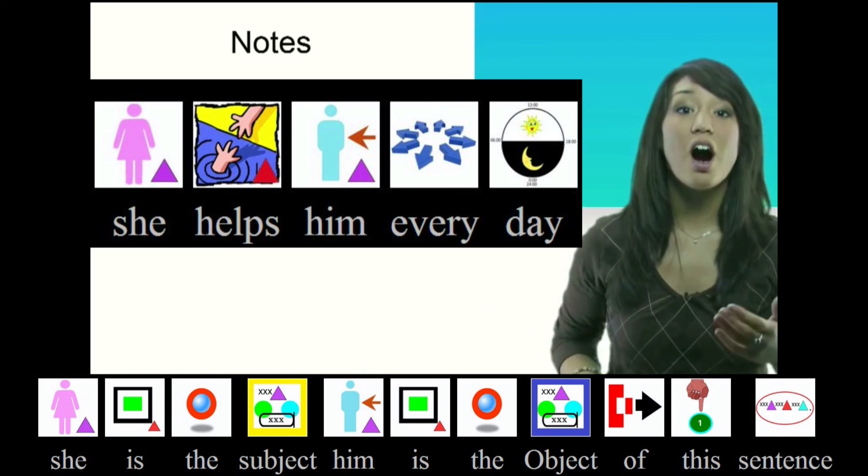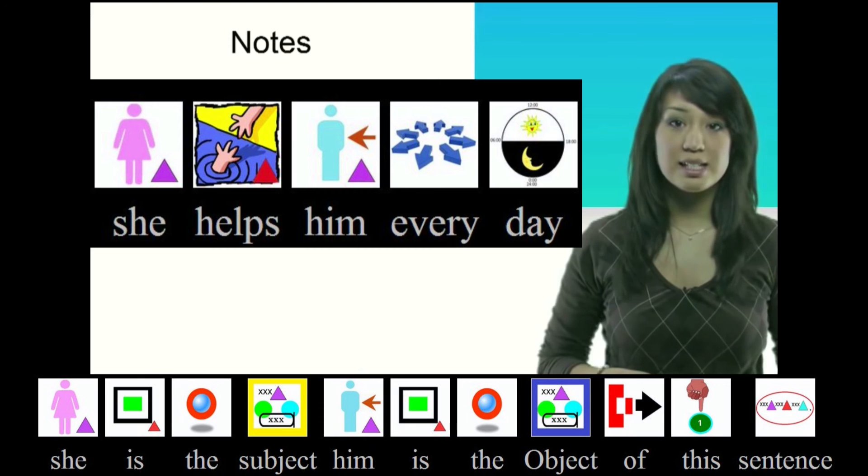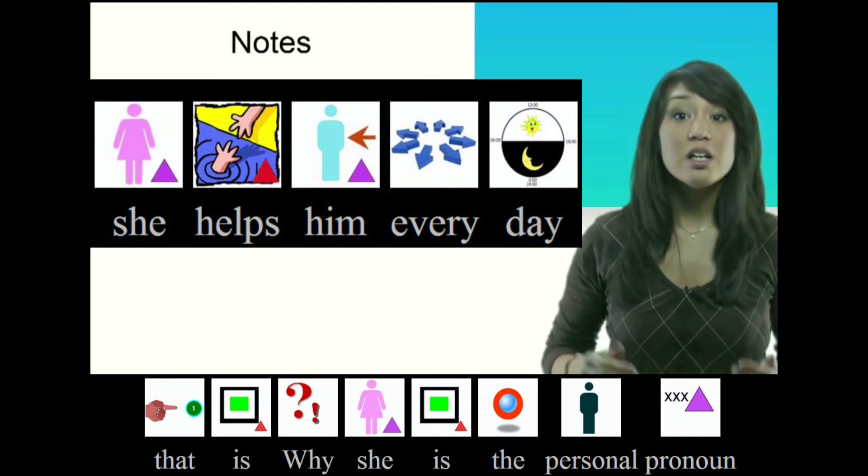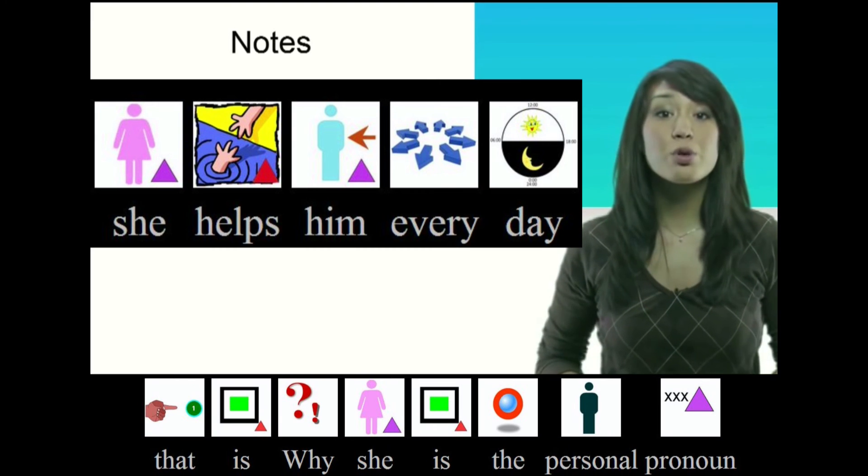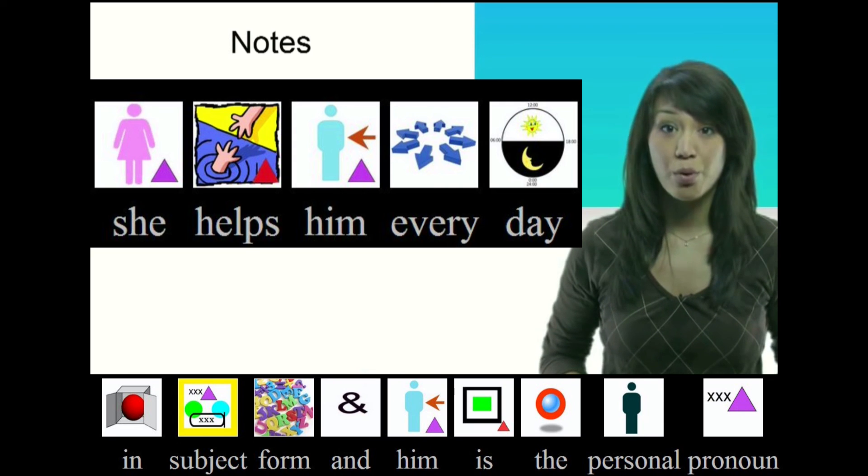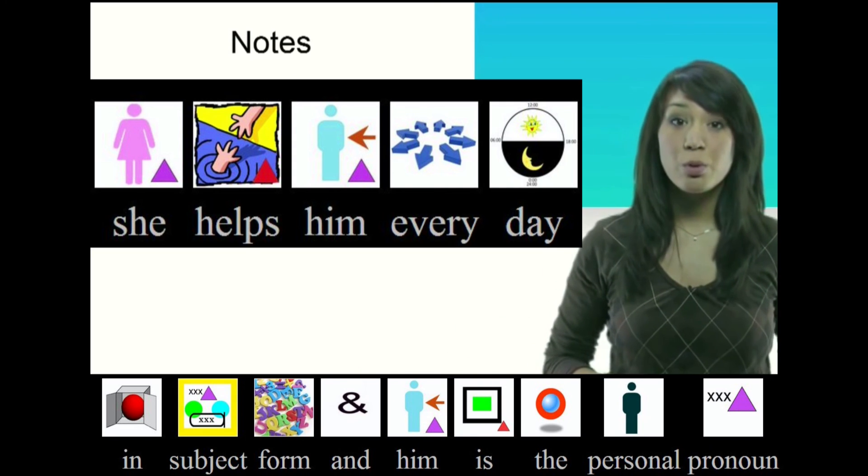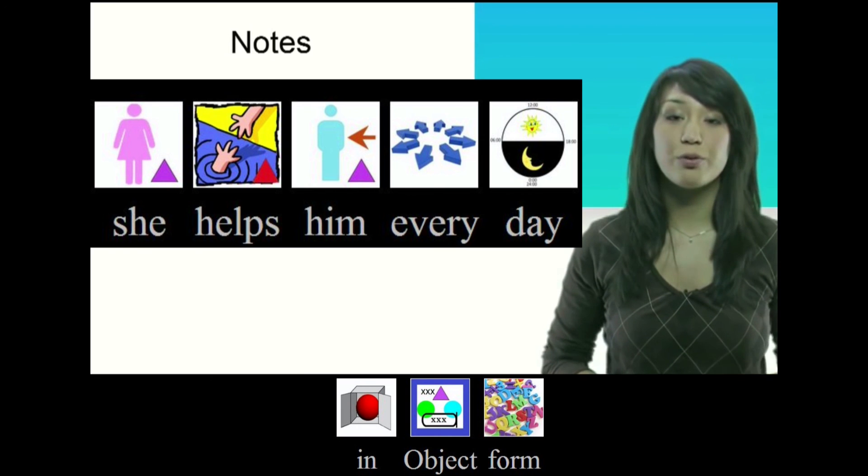Him is the object of this sentence. That is why she is the personal pronoun in subject form and him is the personal pronoun in object form.